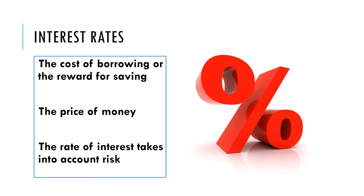Normally the rate of interest takes into account the level of risk. If you are saving money, you will normally demand a higher rate of interest if you consider the person you're lending your money to to be riskier. Likewise, if you're borrowing money and you're considered quite risky, the rate of interest you'll be charged is likely to be higher to compensate the bank for the risk they're taking in giving you the money.